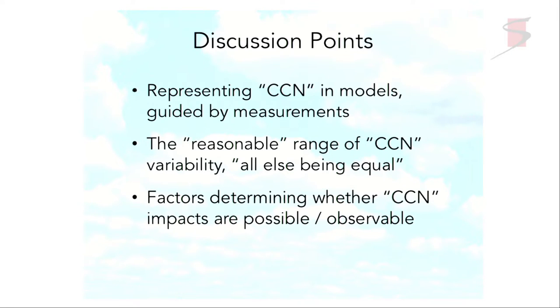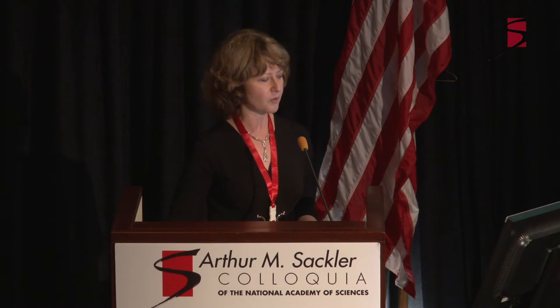Some of the discussion points I'd like to cover today: first, how are CCN represented in models, especially as guided by measurements? How can we use what we've now observed with respect to aerosol and CCN in many different environments to reduce the parameter space in a realistic way? What is a reasonable range of CCN variability and how that might impact cloud formation, all else being equal? And then finally, a few words about meteorology — what factors determine whether CCN impacts are possible or even observable?